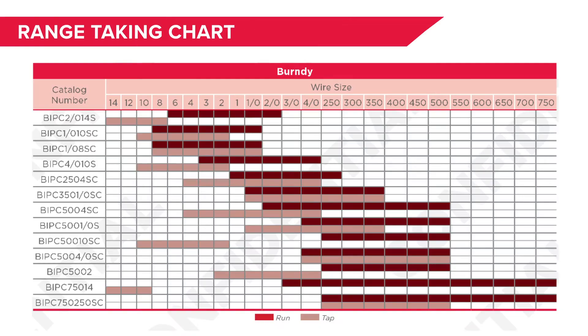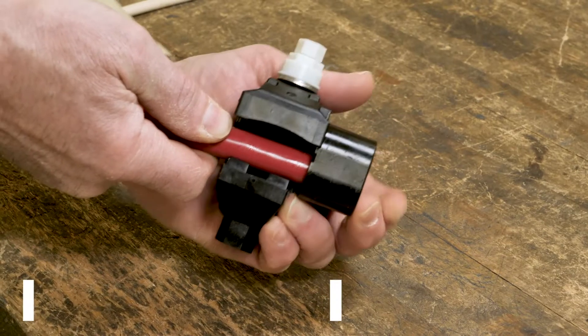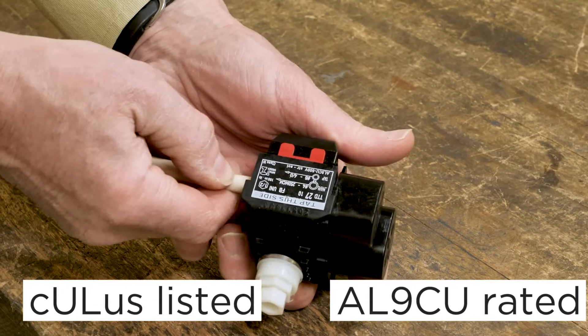Each connector is range-taking. They are CULUS listed and are AL9CU rated for use with copper and aluminum conductor.